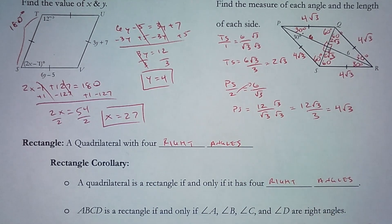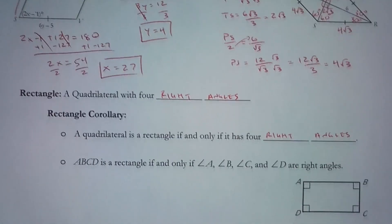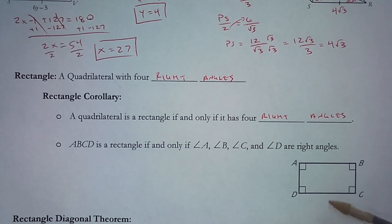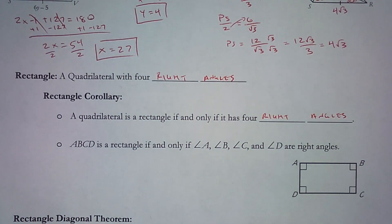So if you know you're looking at a rectangle, you know it has four right angles. If you are looking at a quadrilateral with four right angles, you know it is a rectangle. That means rectangle ABCD is a rectangle if and only if angles A, B, C, and D are all right angles — each of these is 90 degrees.